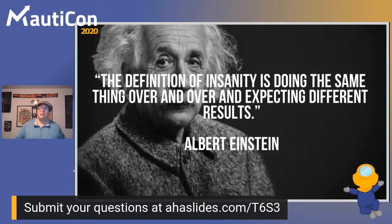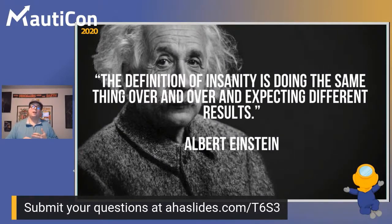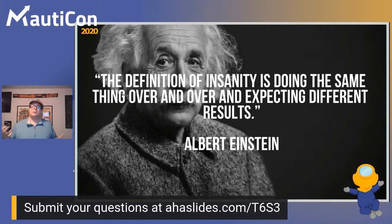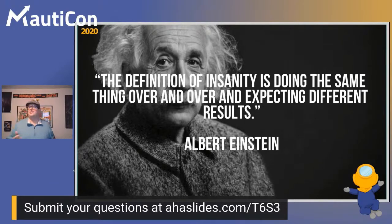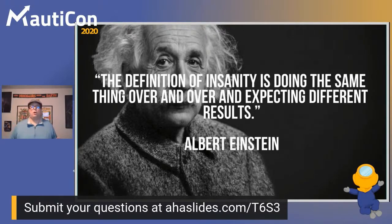Albert Einstein said the definition of insanity is doing the same thing over and over again and expecting different results. This is similar to the guessing thing — maybe you're doing the same thing and not getting results. Maybe you're not getting the performance you want from your site and you don't know why. You've heard about A/B testing but you don't really know what to do.